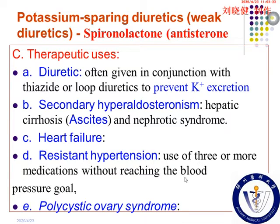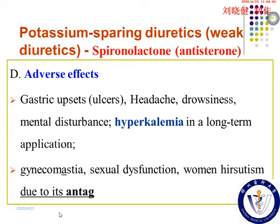This drug is often used for the treatment of polycystic ovary syndrome because it can block androgen receptors and inhibit steroid synthesis at high doses, thereby helping to offset increased androgen levels seen in these disorders. Its adverse effects are usually related to its potassium-sparing diuretic effects and anti-sex hormone effects.